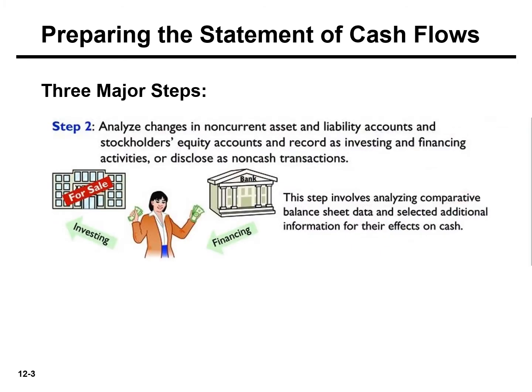Step two involves analyzing a comparative balance sheet, as well as selected additional information to determine their effects on cash. More specifically, we're going to analyze changes in non-current or long-term assets and liabilities accounts, as well as stockholders' equity accounts. We're going to record those changes as investing and financing activities, or in the event they are a non-cash transaction, we will disclose that.